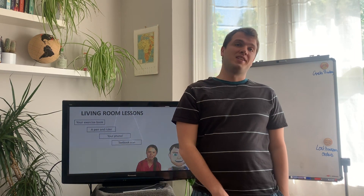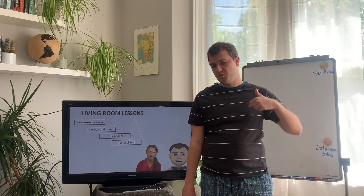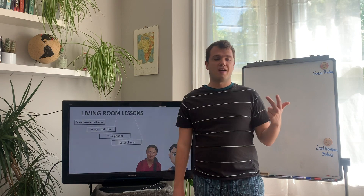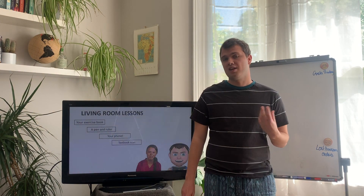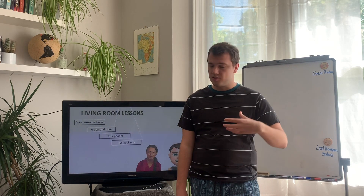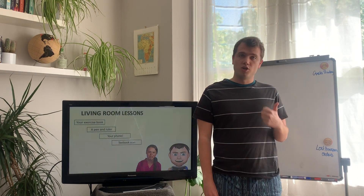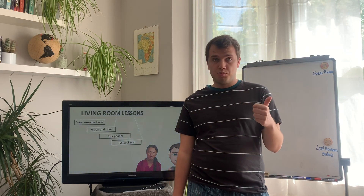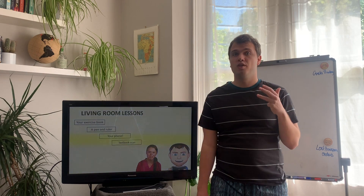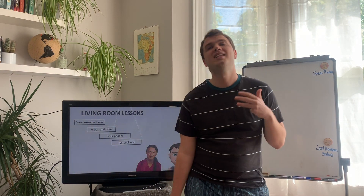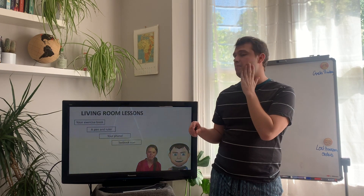What we are doing today is continuing with our climate change topic. We've had a look at the causes, the evidence, and some generic effects. For the next few lessons we're going to be looking at specific places or ecosystems affected by climate change. You're going to need your exercise book, a pen and a ruler, your phone, and the scan of the textbook which was attached to this email. Make sure you've got that open to refer back to.